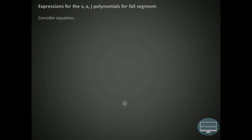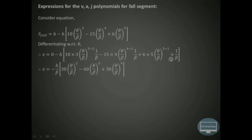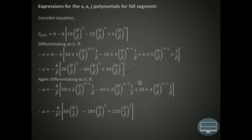We can now extend this to find the velocity, acceleration, and jerk polynomials for the fall segment. Differentiating S_fall with respect to theta using the power rule and chain rule — for example, the derivative of (θ/β)³ is 3·(θ/β)²·(1/β) — we obtain the velocity expression. Differentiating velocity gives acceleration, and differentiating acceleration similarly gives the jerk expression for the fall segment.